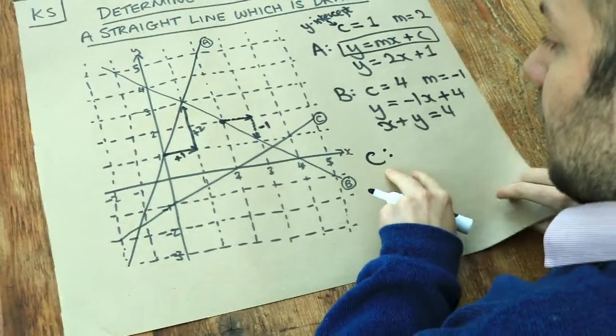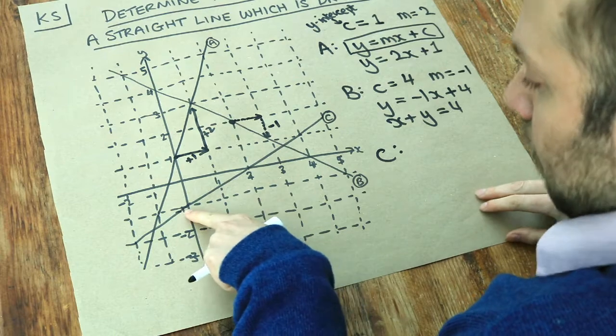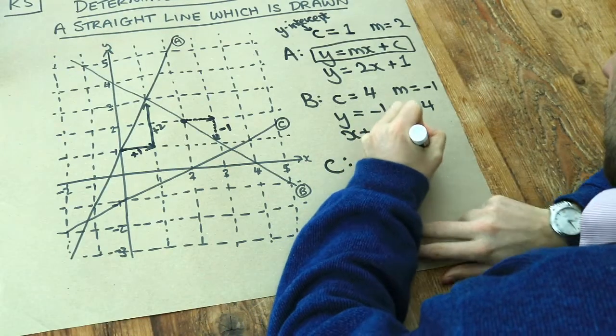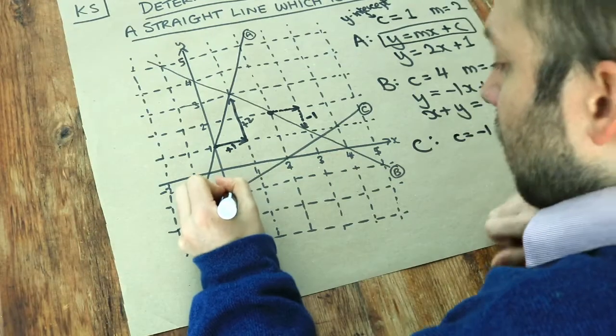And what about C? The y-intercept is minus 1, that's where it's cutting the y-axis. So C is minus 1. And what's the gradient? Well let's look.